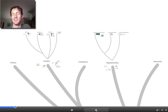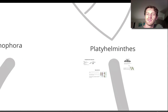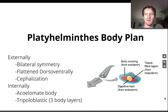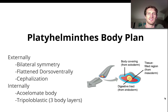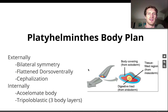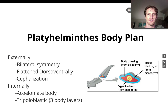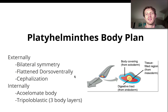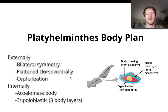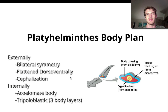Literally the word Platyhelminthes translated means flatworm. There are four different things I'd like you to know about all flatworms, and the first is their body plan. Externally, Platyhelminthes have what we call bilateral symmetry, which means that if you divide them straight down the middle, they should be the same on the right and the left. This is sort of the first time on the tree of life that we can actually see bilateral symmetry. Before this, in Porifera we mainly have asymmetry, and in Cnidaria we have radial symmetry — they're circular.